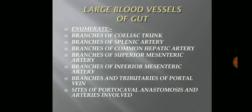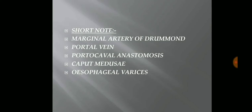Large blood vessels of the gut. This chapter is very, very important and you can expect any of these enumerate questions. Enumerate questions include: branches of the celiac trunk, branches of the splenic artery, branches of the common hepatic artery, branches of the superior mesenteric, inferior mesenteric, and branches and tributaries of the portal vein. The site of portal-caval anastomosis and the various arteries involved is the most important question. Short notes can be expected on: marginal artery of Drummond — which is important — portal vein, portal-caval anastomosis — most important — and caput medusae and esophageal varices, which are also important.